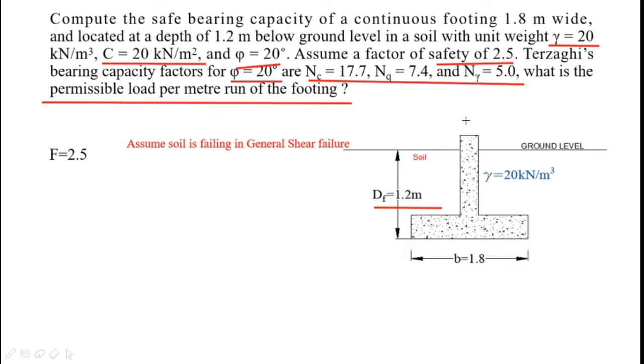Now there are two ways that you can solve this numerical. First way: looking at the value of φ, which is given 20 degrees. We had seen that if your value of φ is less than 28 degrees, then the soil will undergo local shear failure. If the soil is going into local shear failure, you have to use Terzaghi's modified formula. That is one way of doing it. The other way is that you just directly assume that your soil is failing in general shear failure. So there are two ways you can solve. Both the phases will be totally right.